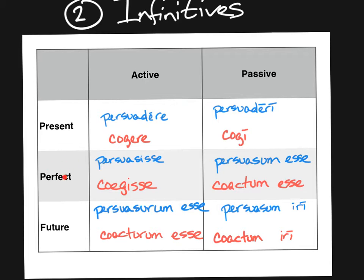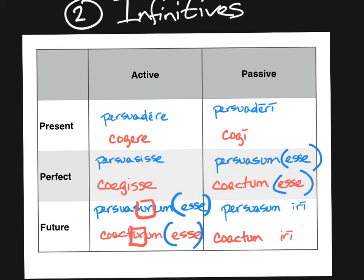Anything in the perfect infinitive happens before the main verb. Then let's look at the future infinitive — the future infinitives are both two-part verbs: persuasurum esse, which is future because of the -ur-, and coactorum esse. Caesar is assuming that you know Latin, so he sometimes gaps the second half of these two-part infinitives — and that is going to show up a lot in this chapter. He gives you indirect statements where he jumps into accusative infinitive, gives you the kissing verb at the end, and gaps the esse. Persuasum esse or coactum esse means somebody was persuaded or forced before the main verb. Persuasurum esse means somebody will persuade or force after the main verb.